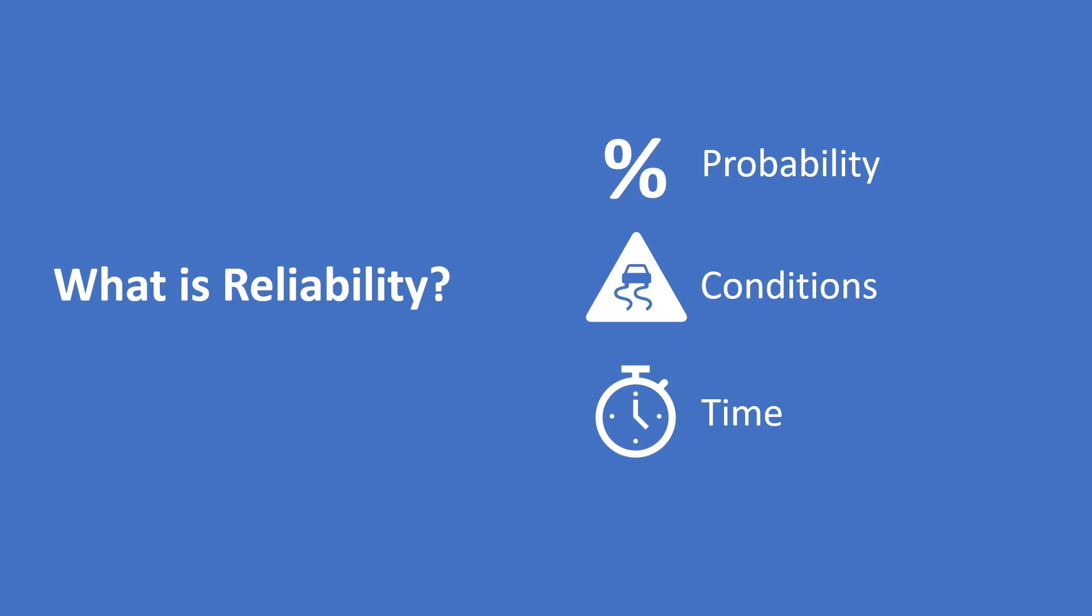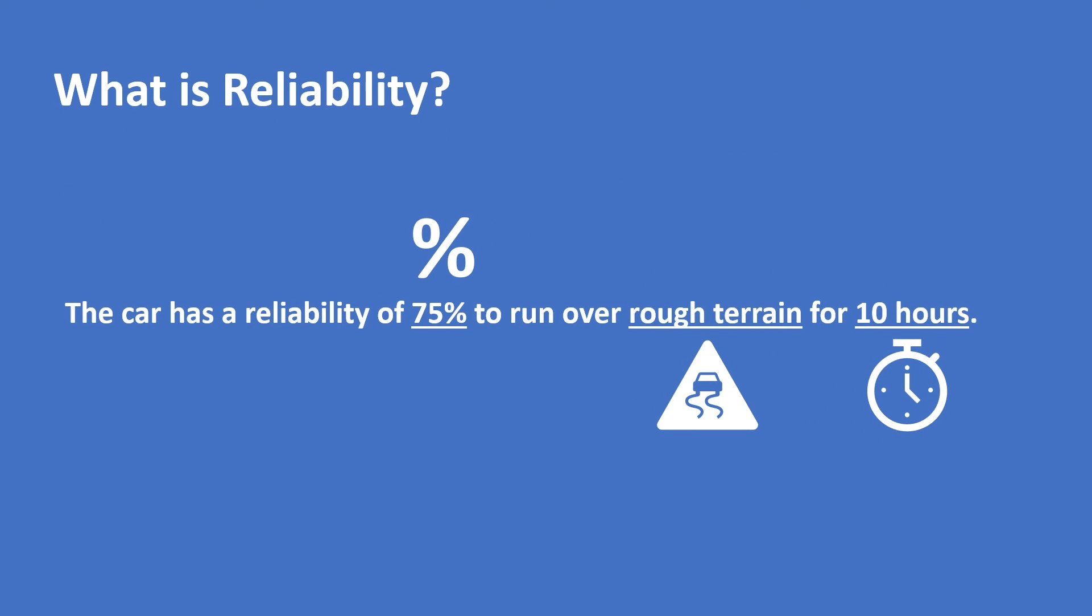So, the correct way of describing reliability of your car would be that the car has a reliability of 75% to run over rough terrain for 10 hours. This statement would express that there is a 75% chance that your car won't break down under stated conditions and a specified time interval. This chance can vary if you either vary the conditions or the time interval. In this way, whenever we describe reliability in an industrial and engineering context, we always specify the three elements: probability, conditions, and time.